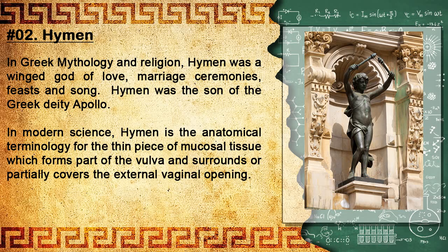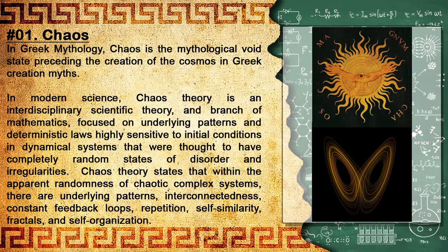Number 2: Hymen. In Greek mythology and religion, Hymen was a winged god of love, marriage ceremonies, feasts, and song. Hymen was the son of the Greek deity Apollo. In modern science, the hymen is the anatomical terminology for the thin piece of mucosal tissue which forms part of the vulva and surrounds or partially covers the external vaginal opening.